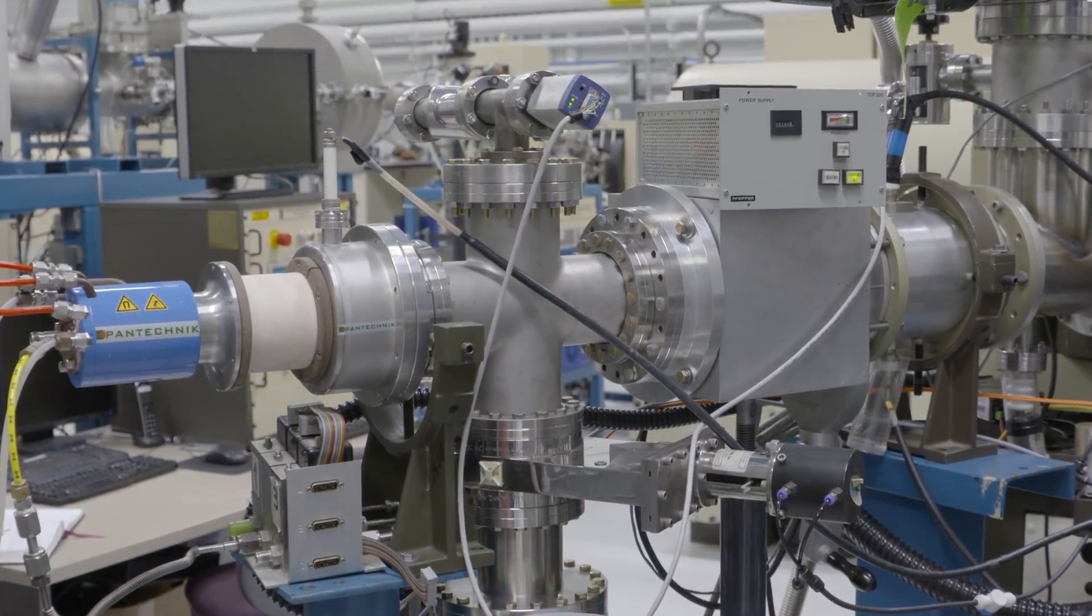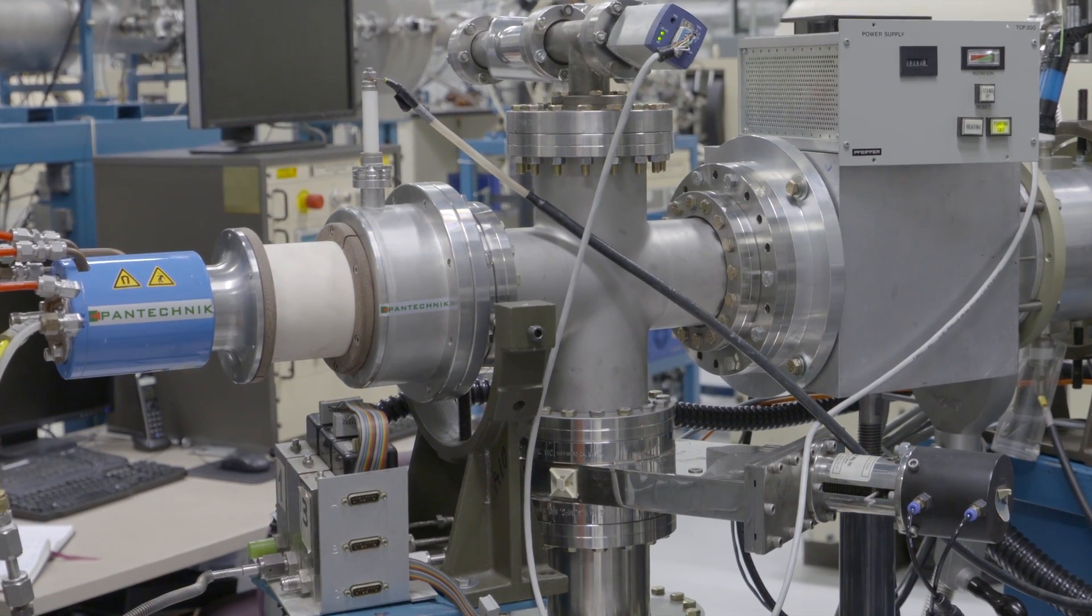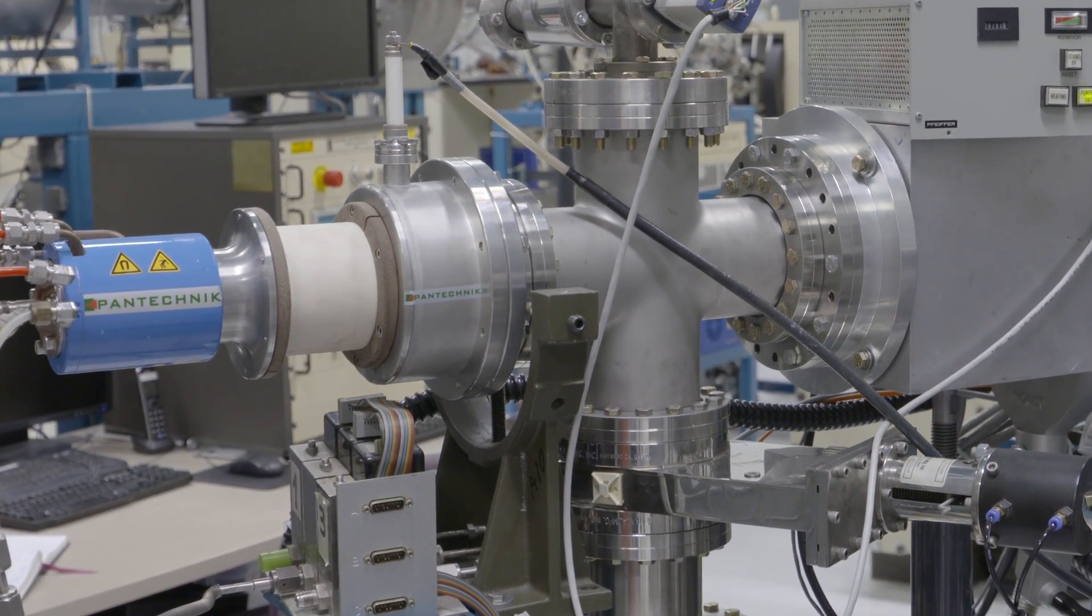The ECR source is a high-current source for production of positive hydrogen, deuterium, and helium that are then turned into negative ions in a sodium oven.